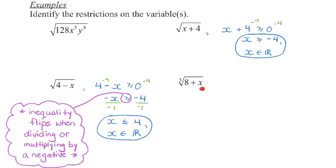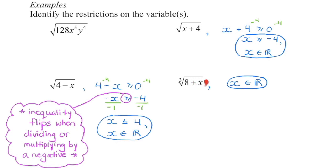In this next example, we have an odd index — this is a cube root. So it is possible to have a negative radicand. In this case, we just say that x has to be an element of the real number system, and any value, positive or negative, will work there.